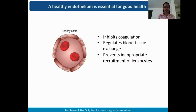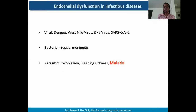A healthy endothelium is essential for good health. Our endothelium is functioning as it should in all of the different vessels in our body — inhibiting coagulation and allowing the free flow of blood through vessels, acting as a semi-permeable membrane to properly regulate the exchange of molecules between blood and tissue, and preventing the inappropriate recruitment of leukocytes. We want our endothelium to be responding appropriately to various stimuli in a way that protects our bodies.